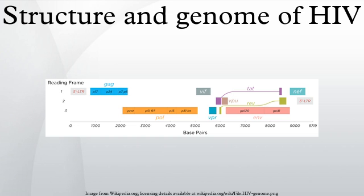The GAG gene provides the basic physical infrastructure of the virus, and POL provides the basic mechanism by which retroviruses reproduce, while the others help HIV to enter the host cell and enhance its reproduction.